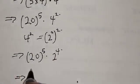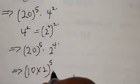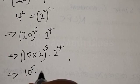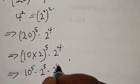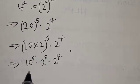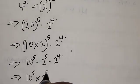This implies that 20 can also be expressed as 10 times 2. So we have 10 times 2 raised to power 5, multiplied by 2 raised to power 4. Applying the same rule, this gives us 10 raised to power 5 multiplied by 2 raised to power 5 multiplied by 2 raised to power 4, which equals 10 raised to power 5 multiplied by 2 raised to power 9.